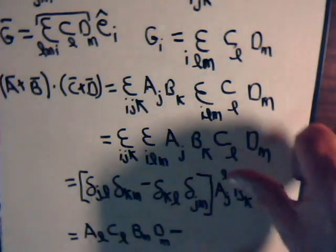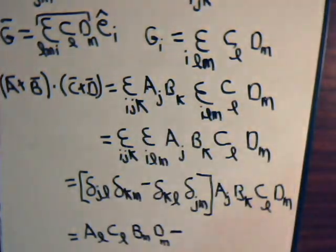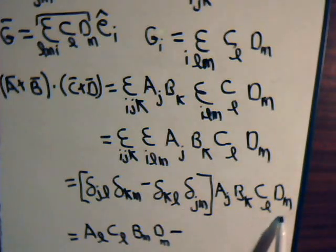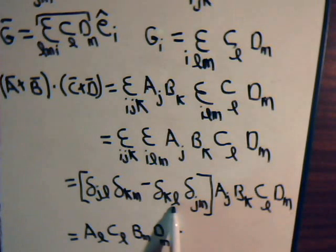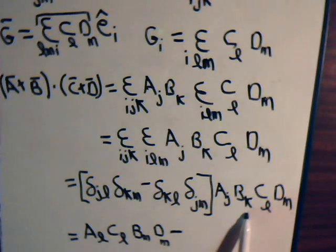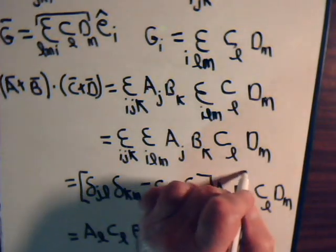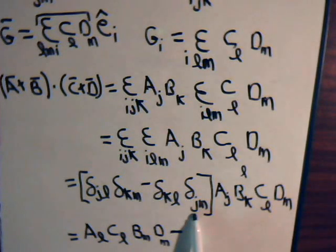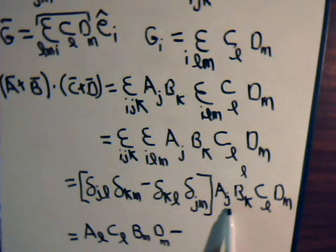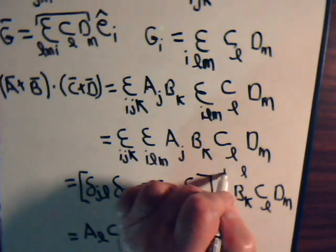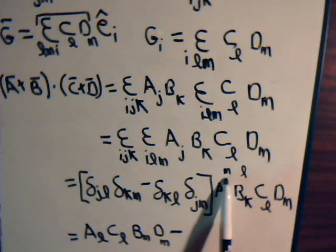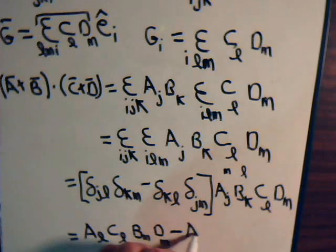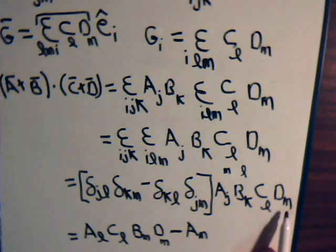Then we have minus. What effect do these have on these scalars? So this is zero unless K equals L, then it becomes one, so that K is going to become an L. And that J has to be an M, so this J changes to an M.